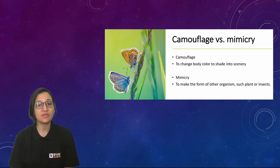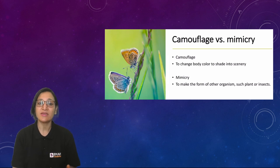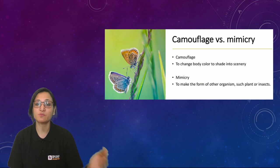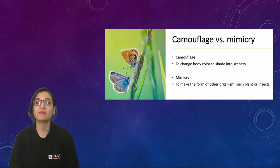In mimicry, one organism copies the behavior of another organism. Whereas camouflage is about the relationship between an organism and its background or its natural scenery.